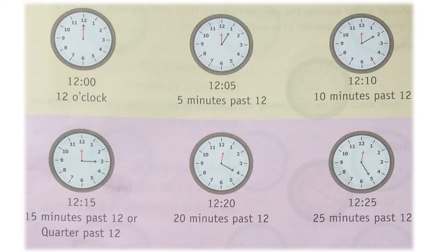In the third picture, the minute hand is at two, meaning it passed 10 small markings. So how many minutes passed? Yes, the minute hand passed 10 minutes, and the hour hand is at 12. So the time is 12:10, or we can say ten minutes past 12.